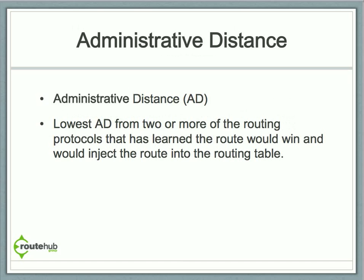The answer is it uses the administrative distance, or AD for short. The lowest administrative distance among two or more routing protocols that have learned the route wins and injects the route into the routing table. In our example, we had OSPF and EIGRP.